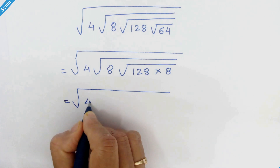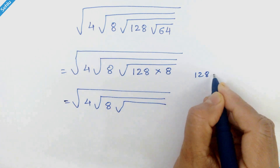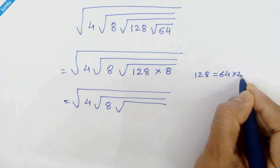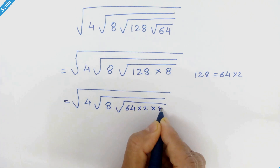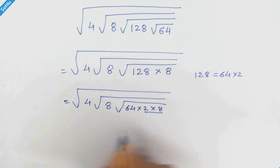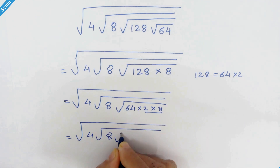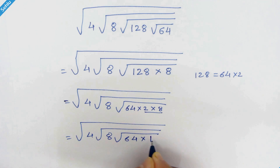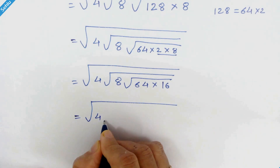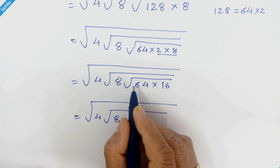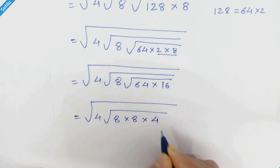In the next step we can write it as square root of 4 times square root of 8. Now 128 is 64 times 2, so we put 64 times 2 in its place, times 8. Now 2 times 8 is 16, so in the next step we write square root of 4 times square root of 8 times square root of 16. Square root of 64 is 8 and square root of 16 is 4.